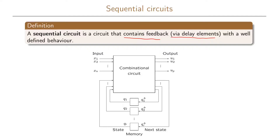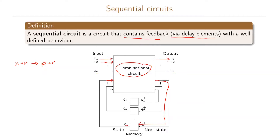Here is a canonical representation of our sequential circuit. We have our combinational circuit, which takes the system inputs as well as the outputs from the delay elements as inputs. The output of the combinational circuit is both the system output and the inputs to the delay elements. If we have n inputs and r d-elements, the combinational circuit provides a mapping from n plus r variables to p plus r outputs, where p is the number of system outputs. These elements are typically d flip-flops in our realizations, and they give us the memory of our system.